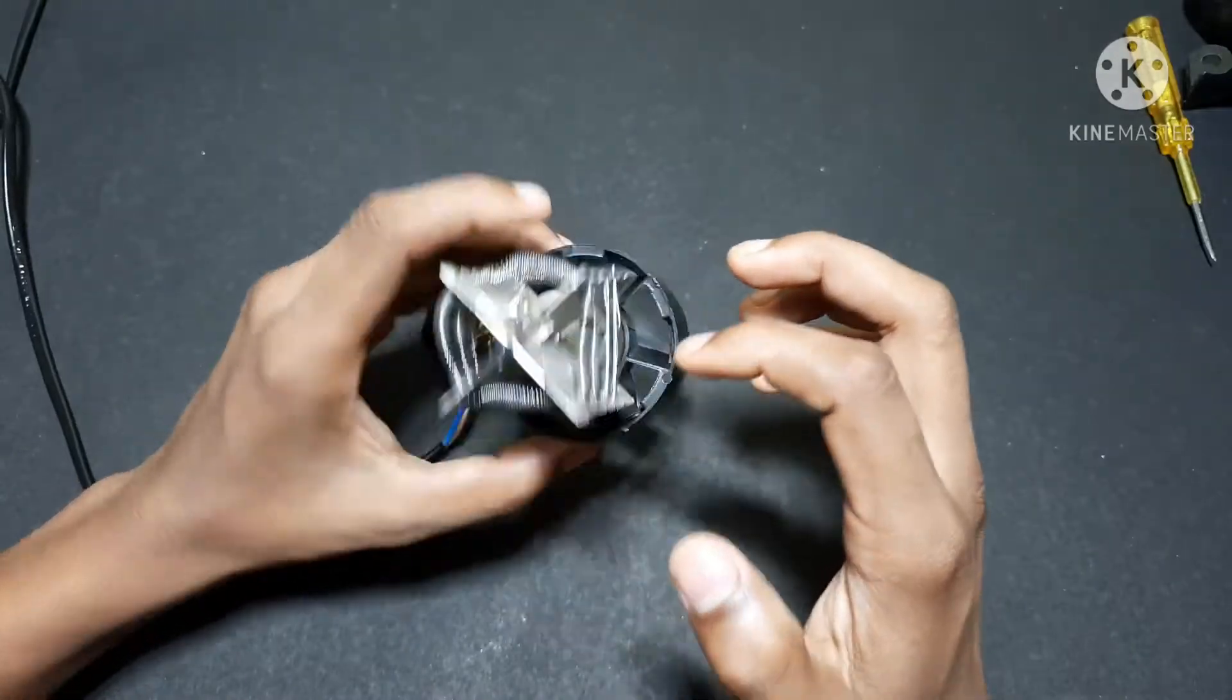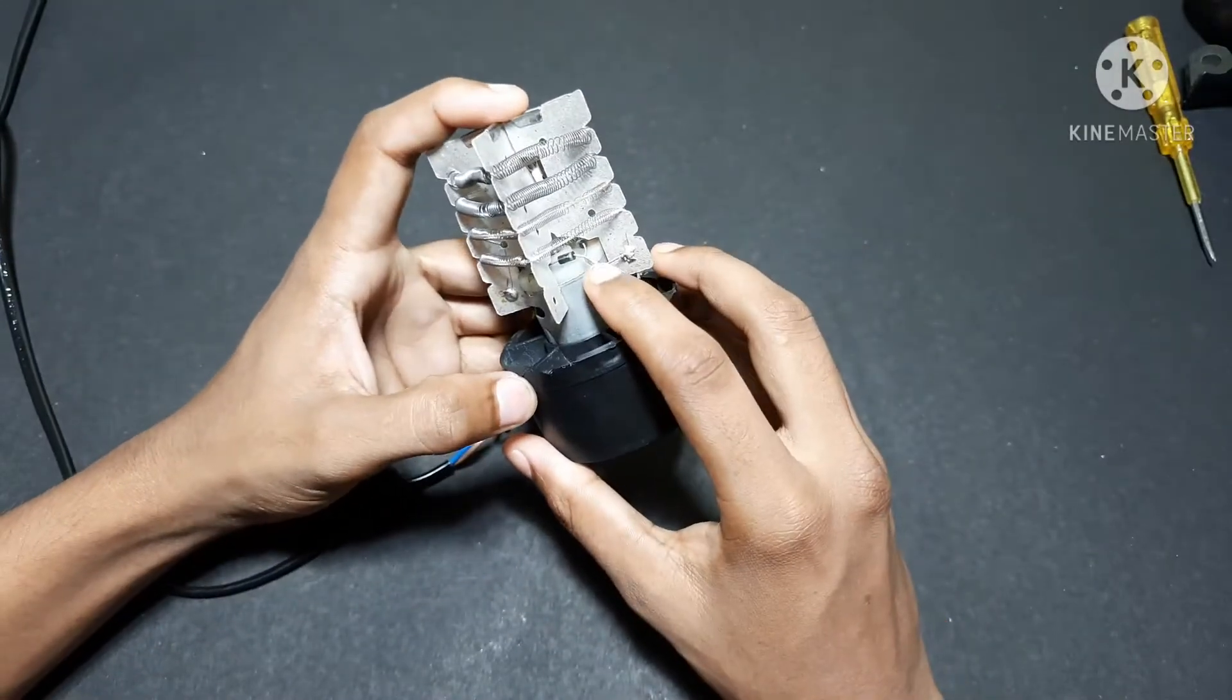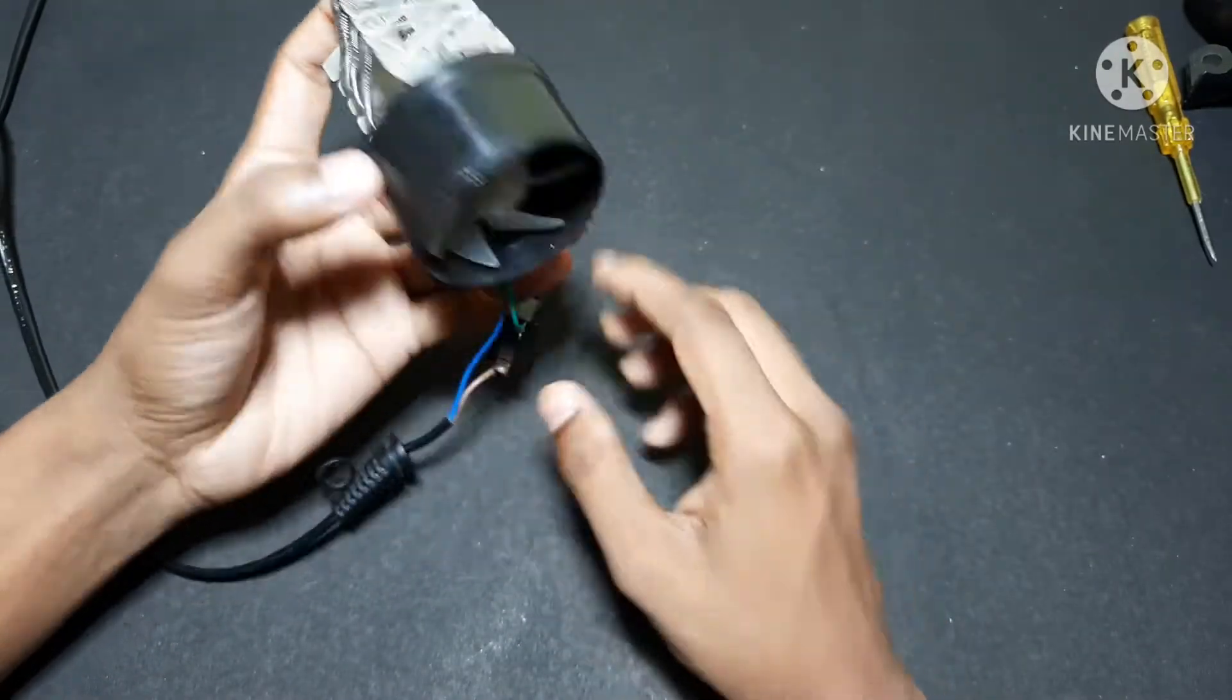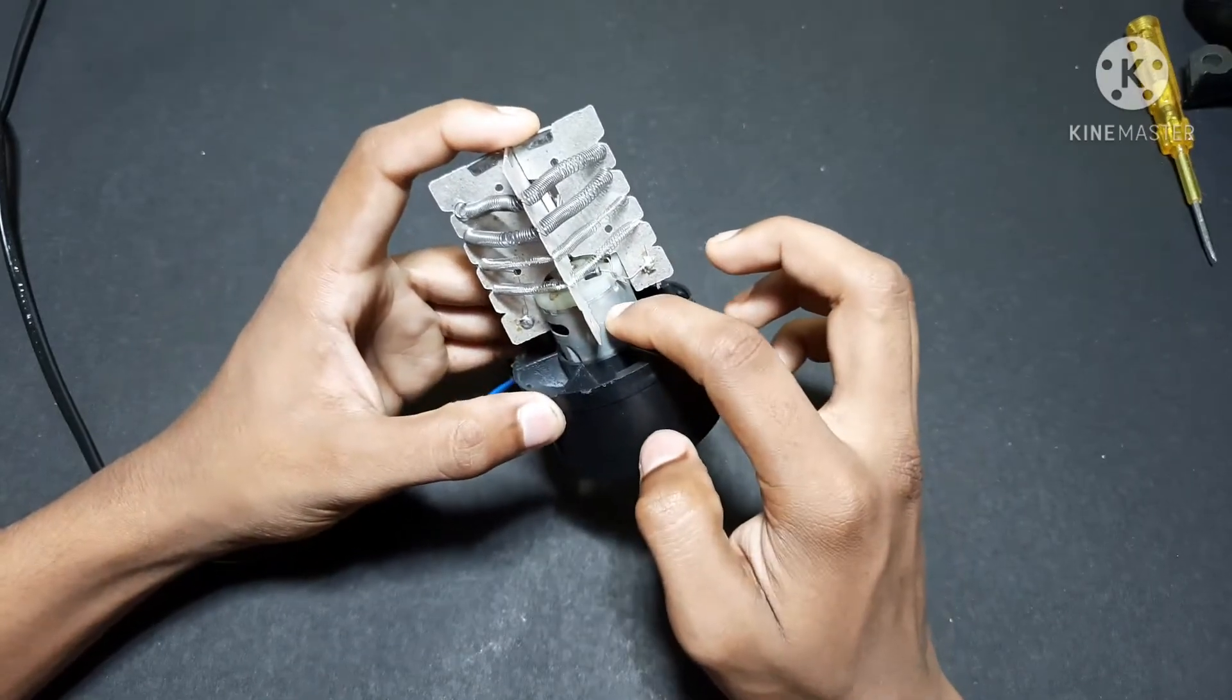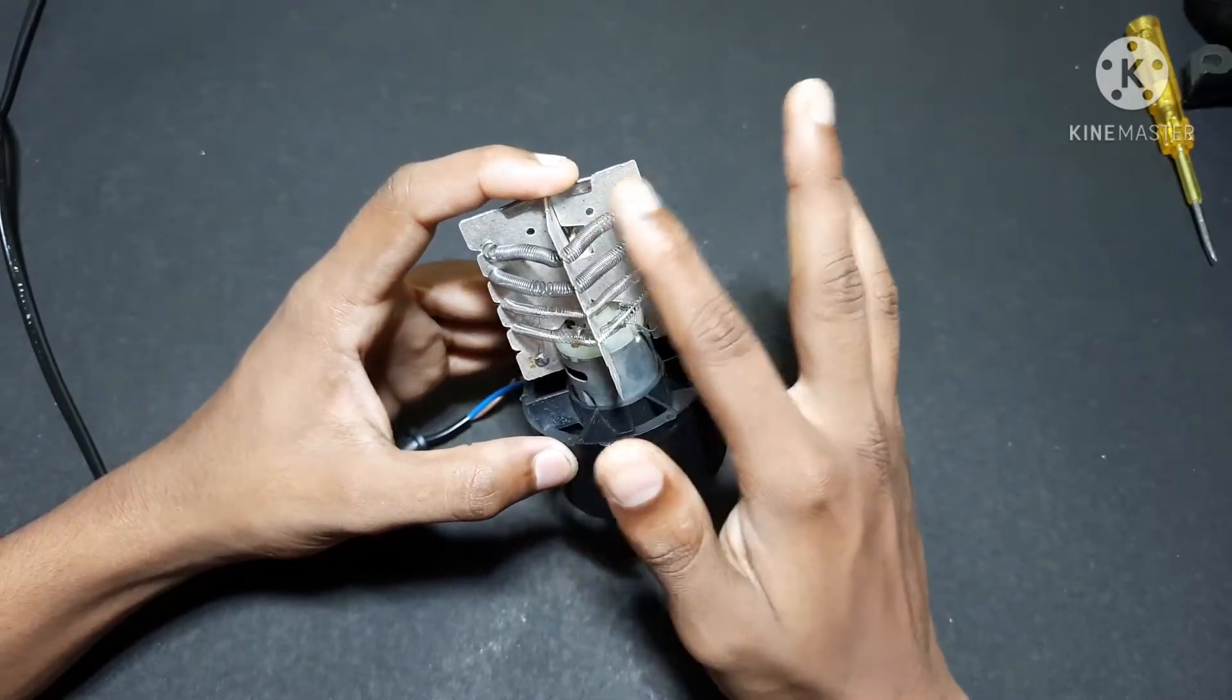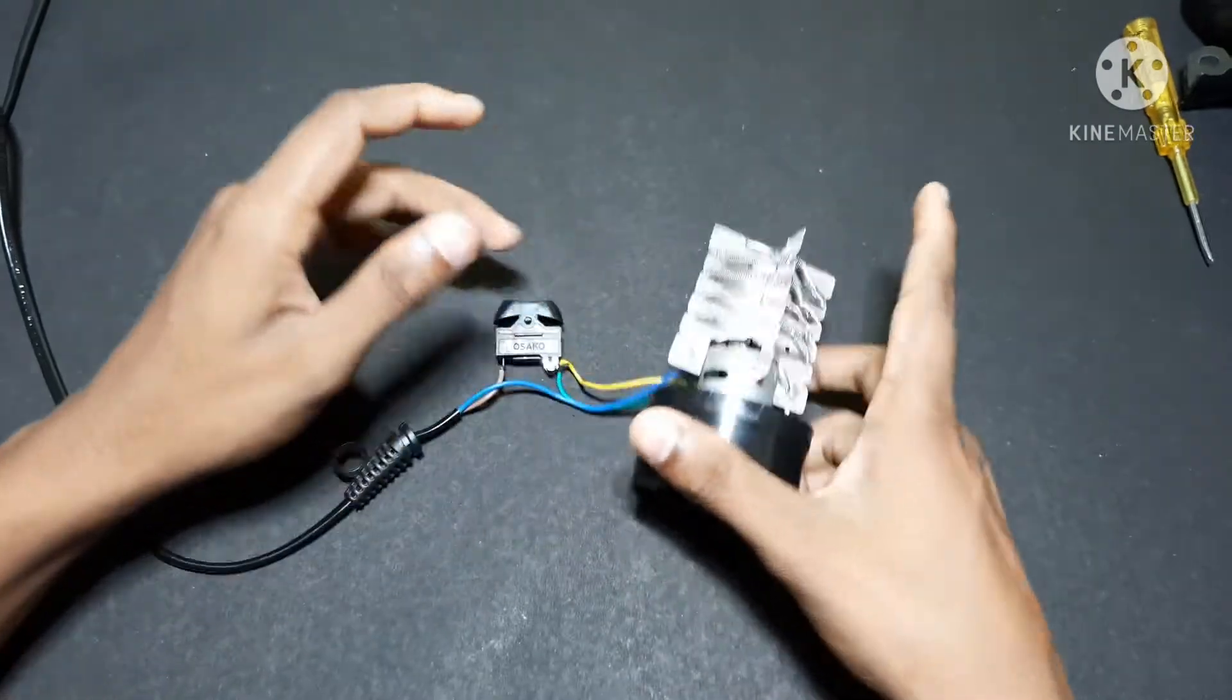To run the DC motor, here is the bridge rectifier here. It converts the AC supply to DC supply for the motor and only AC supply for the nichrome wire. Okay.